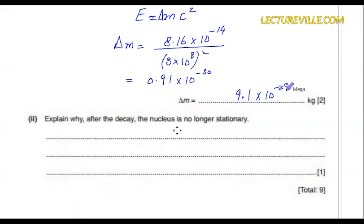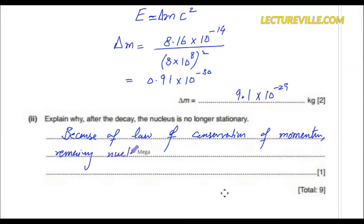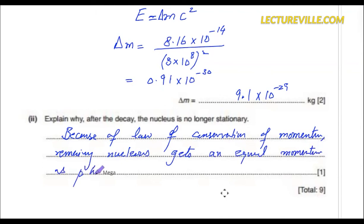Explain why after the decay the nucleus is no longer stationary. Because of the law of conservation of momentum, the remaining nucleus gets an equal momentum to the photon but in the opposite direction. So if the photon is emitted by the nucleus, the remaining nucleus will have a recoil force in the exact opposite direction.